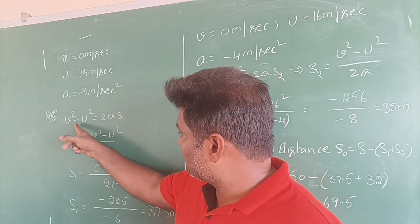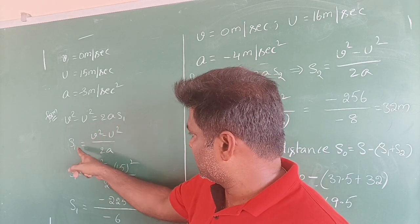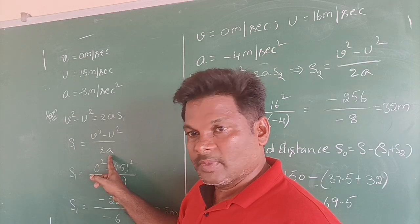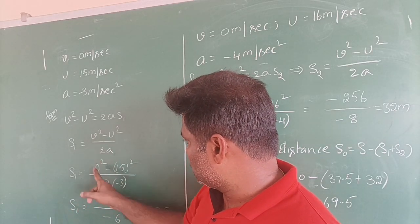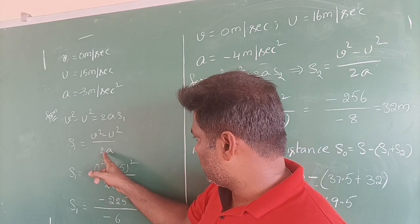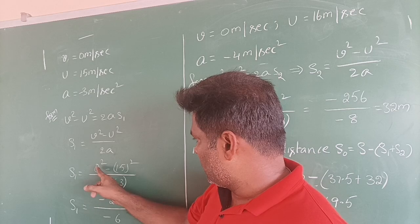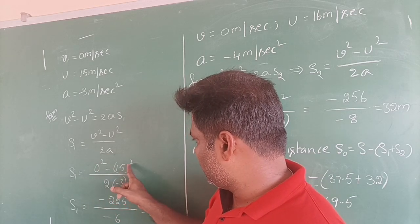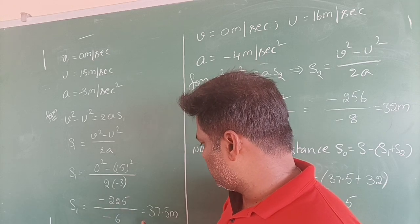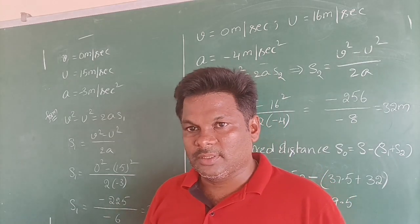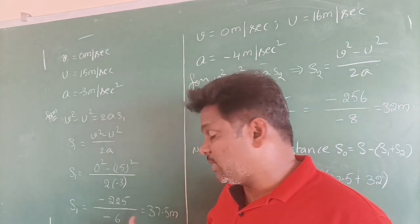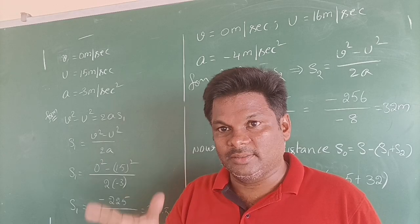S1 is equal to, V is 0 square, U is 15, 15 square, 2 into A acceleration is minus 3. 0 square minus 15 square is equal to minus 225, 2 times 3 is minus 6. By dividing these two, you will get 37.5 meters. After applying brakes, first car travels 37.5 meters.